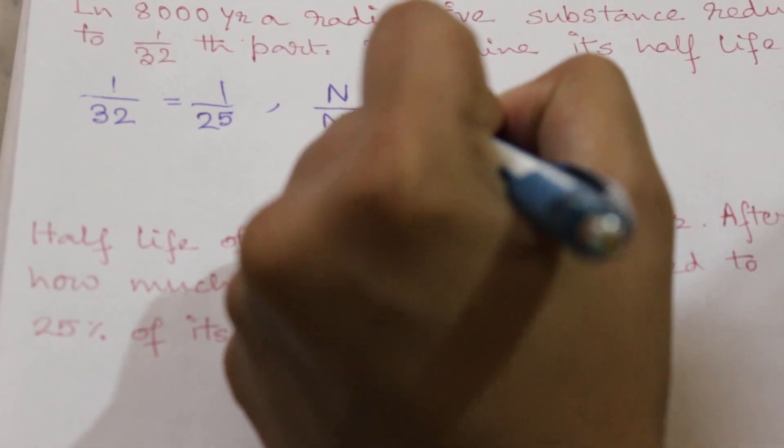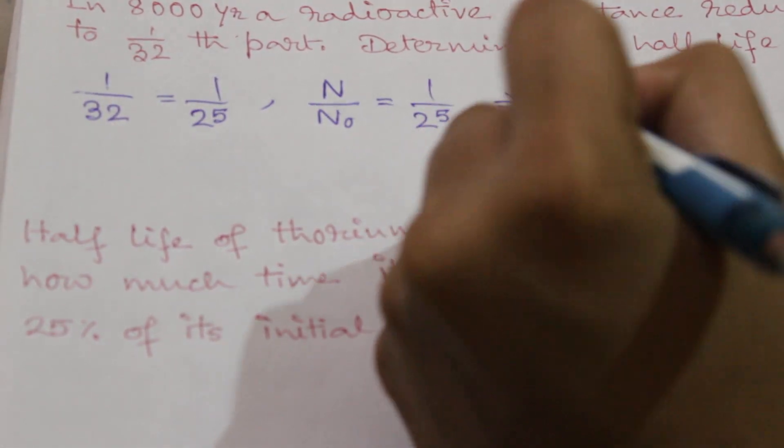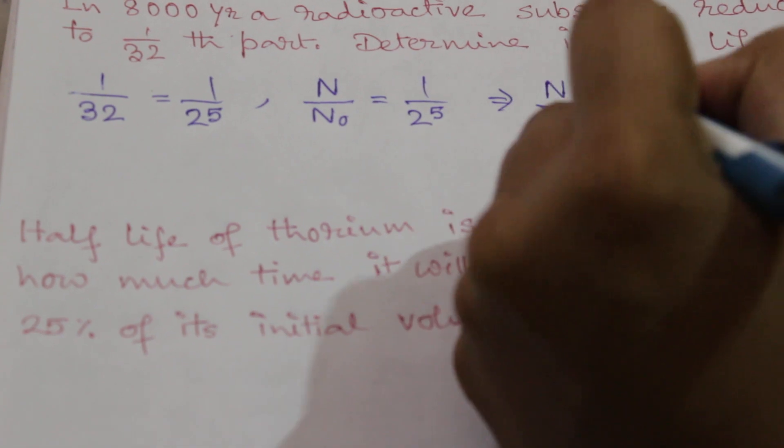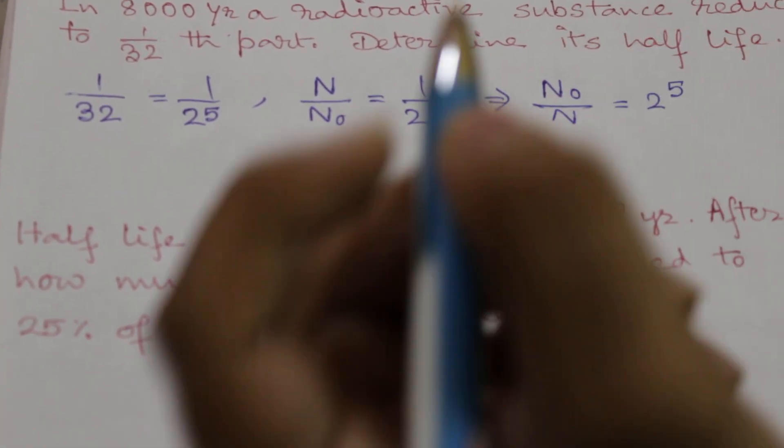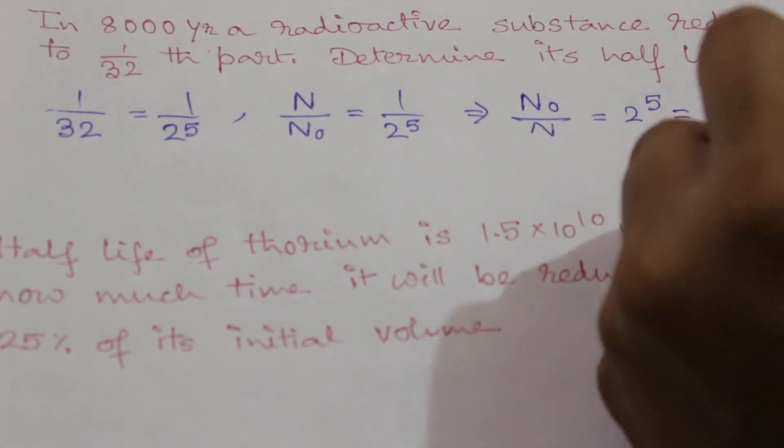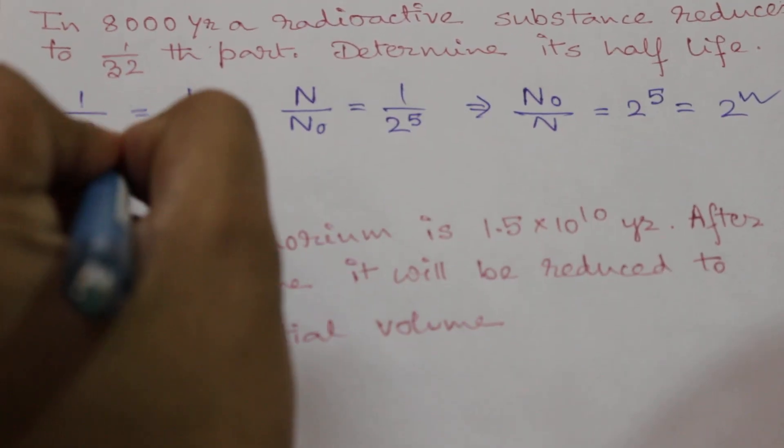According to the question, N by N₀ is 1 by 2 to the power 5, so N₀ by N is 2 to the power 5. Now that is equal to 2 to the power small n, so the number of half-lives is 5.